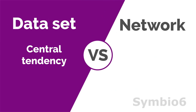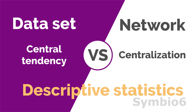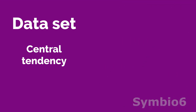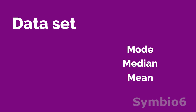Central tendency of a set of data points and network centralization are both descriptive statistics. These statistics summarize and organize characteristics of a data set and a network, respectively. Both reflect the center of the data distribution and are general statistics that summarize the data set. Well-known central tendency measures are mode, median, and mean. Let's refresh these concepts first.